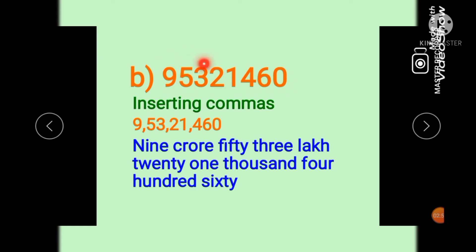Now let us take a number with two, three, four, five, six, seven, and eight digits. Let us arrange these digits in the Indian system of numeration, inserting the commas. The first comma separates the ones period, the second comma separates the thousands period, and the third comma separates the lakhs period. So the number name of this is nine crore fifty-three lakh twenty-one thousand four hundred and sixty.